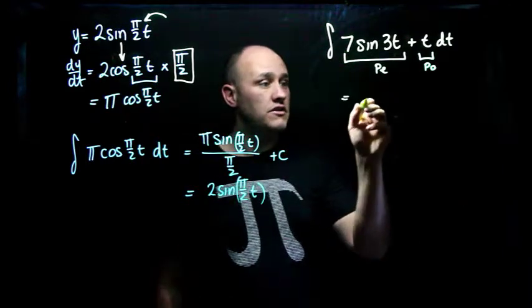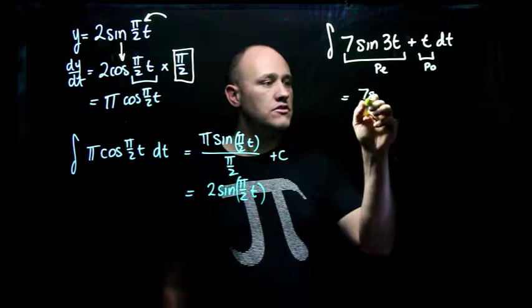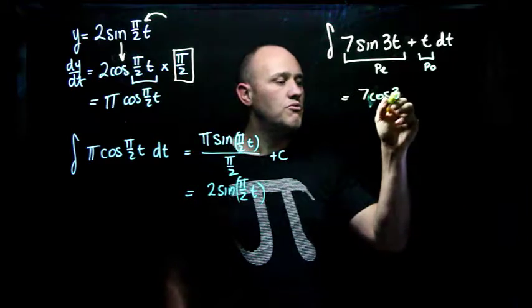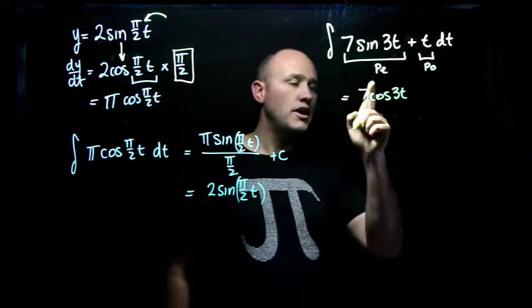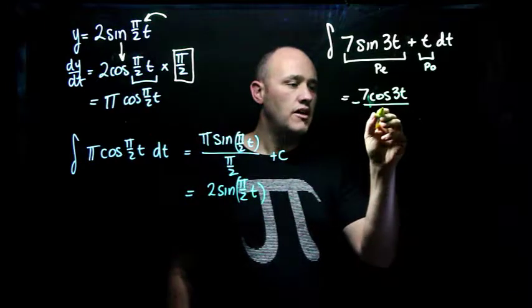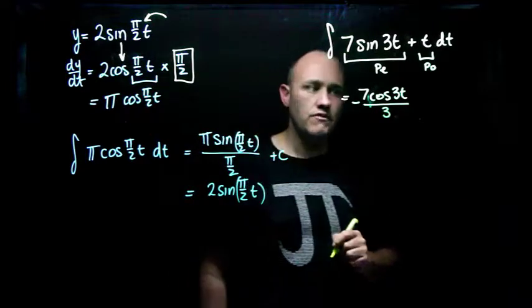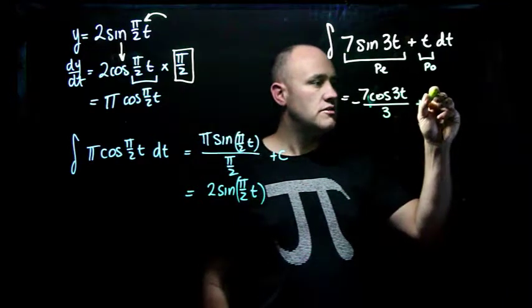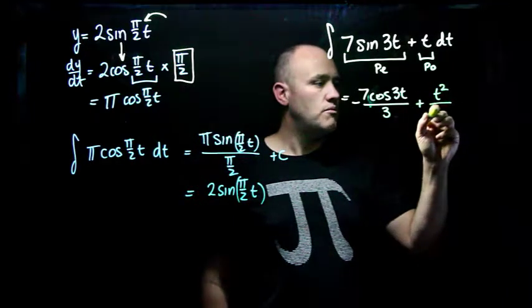So I'm going to integrate these. The first one gives me 7 cos of 3t, but of course sine integrates to give negative cos, and I have to divide that by the derivative of the inside function, which is 3. And over here I get plus t, t becomes t squared, divided by the new power, 2.